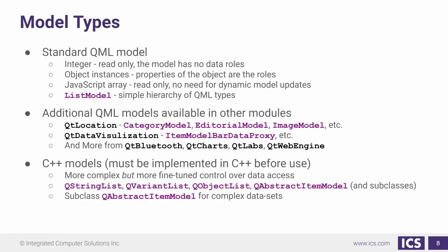We have several model types which we can use in QML. First off, we have an integer. The integer is just read-only — there's no data. This is for when we're creating some delegate a number of times. We can also create objects, and we can use JavaScript arrays. The one that we're going to focus on today is the list model, because a lot of times when we are templating our stuff in QML, we will use the list model.